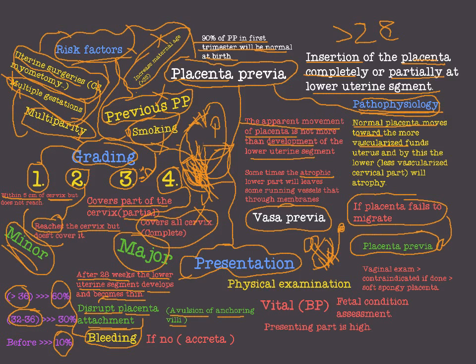If there is no bleeding, then we may have a case of placenta accreta, where the placenta is adherent to the myometrium of the uterus. Sometimes it is adherent to the deeper part — placenta increta. And sometimes it is adherent to the serosa of the uterus — placenta percreta.